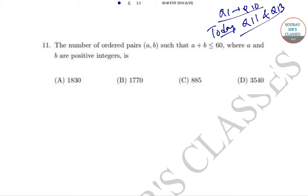So let's begin with question number 11. In question number 11, the number of ordered pairs (a,b) such that a plus b is less than or equal to 60, where a and b are both positive integers, is 1830, 1770, 885, or 3540.